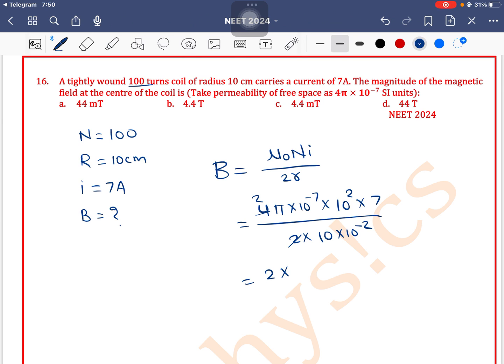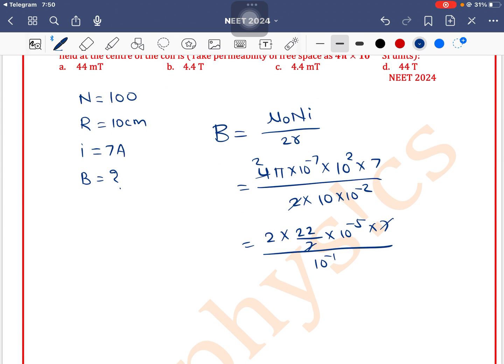2 into, instead of π we will write it as 22 by 7, into 10⁻⁵ into 7, divided by in denominator we have 10⁻¹. This 7, this 7 get cancelled out. So 44 × 10⁻⁵ plus 1 minus 4, which is equal to 4.4 × 10⁻³ tesla.